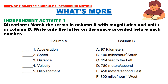What's More: Match the terms in column A with magnitudes and units in column B. Write only the letter on the space provided before each number. For example, 97 kilometers — is it acceleration, speed, distance, velocity, or displacement? The answer is distance.